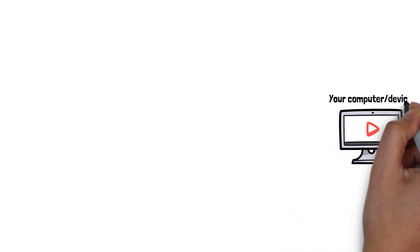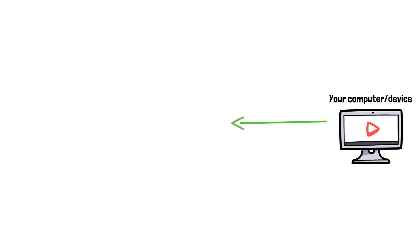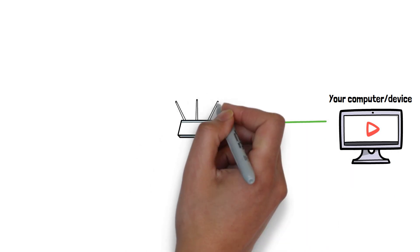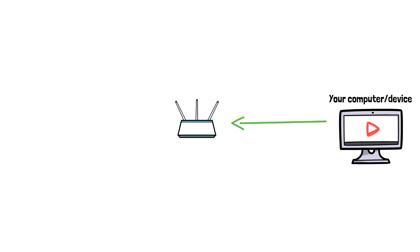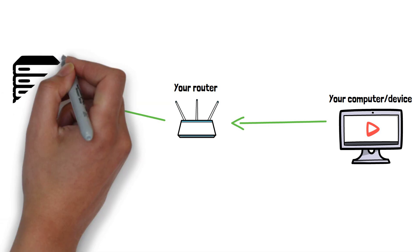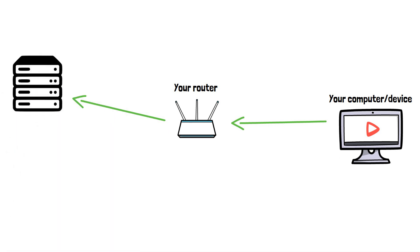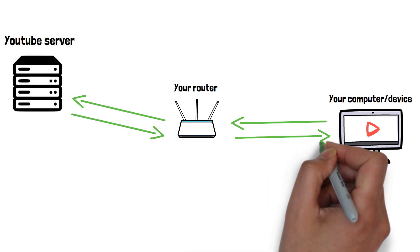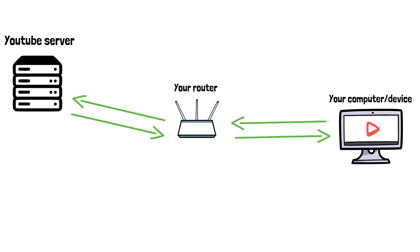You clicking this YouTube video sends a request from your device to your router and then out onto the internet to a YouTube server. The YouTube server then uses your IP address to send that data back to your router and to your device, and you're now watching the video.